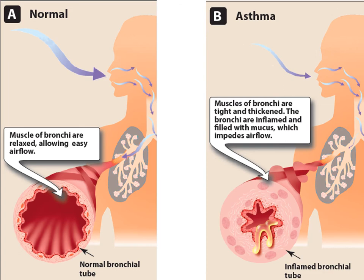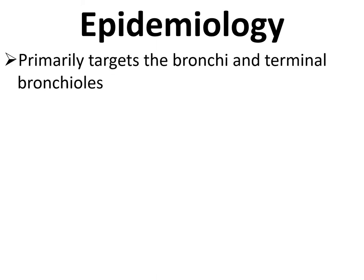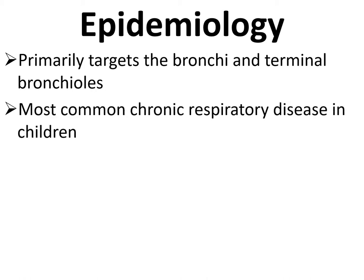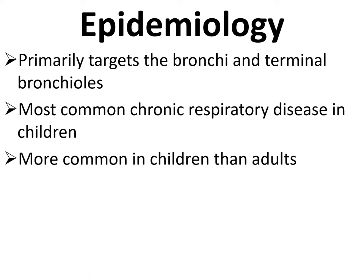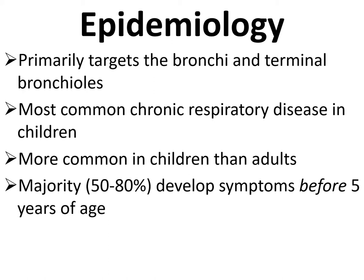The picture shows normal bronchial muscles and the asthmatic patient comparison. Regarding epidemiology, asthma primarily affects the terminal bronchioles and is the most common chronic respiratory disease in children. The prevalence is greater among children than adults; 50 to 80 percent develop symptoms before five years of age.